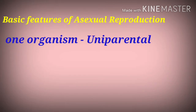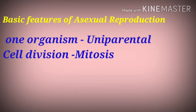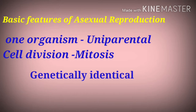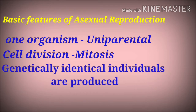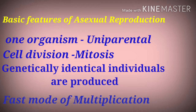Coming to the basic features of asexual reproduction: it involves only one organism, that is, different sexes are not involved, hence uniparental. The cell division during this type of reproduction is by mitosis. New individuals produced are genetically identical to the single parent. It is a fast mode of multiplication.